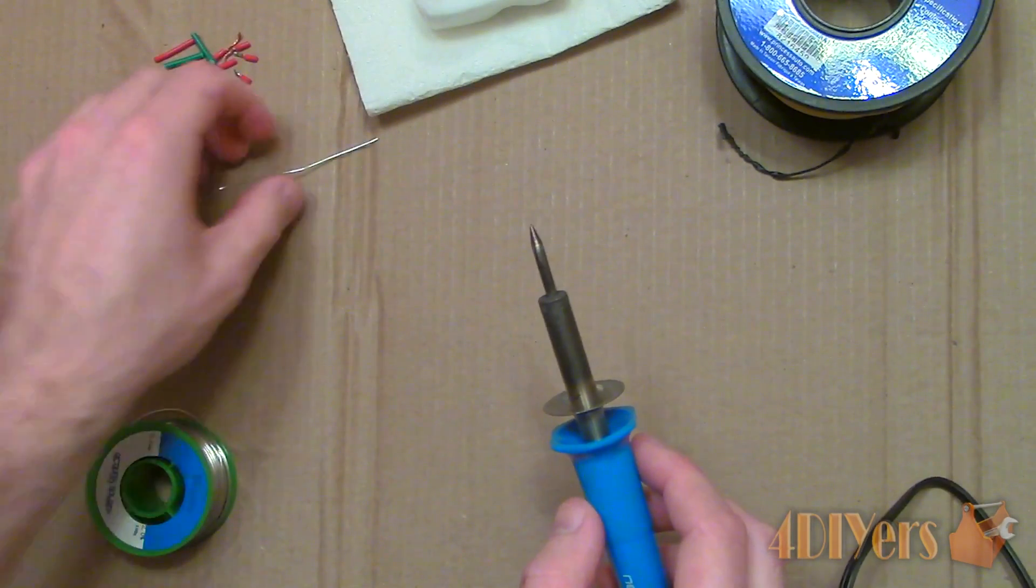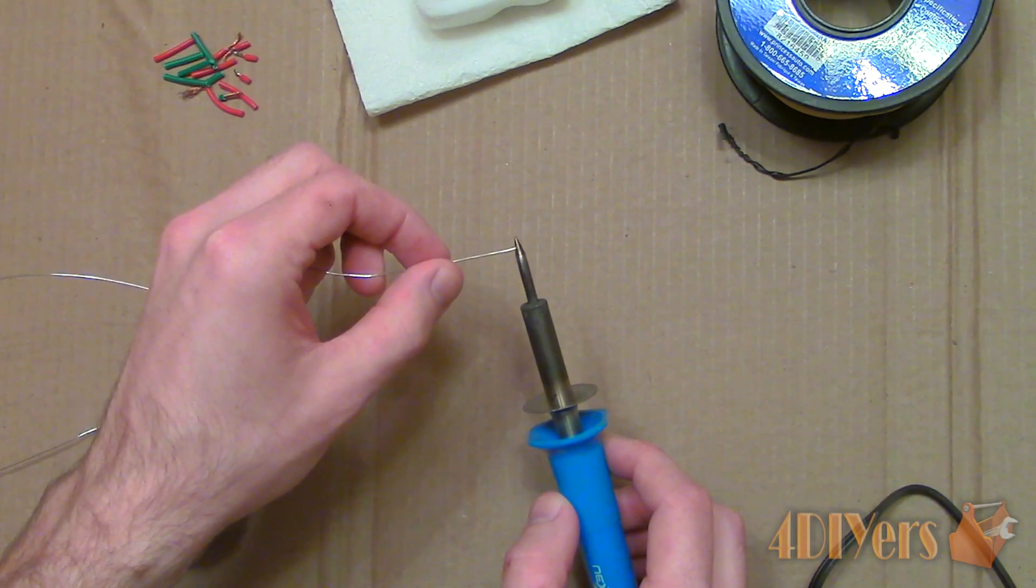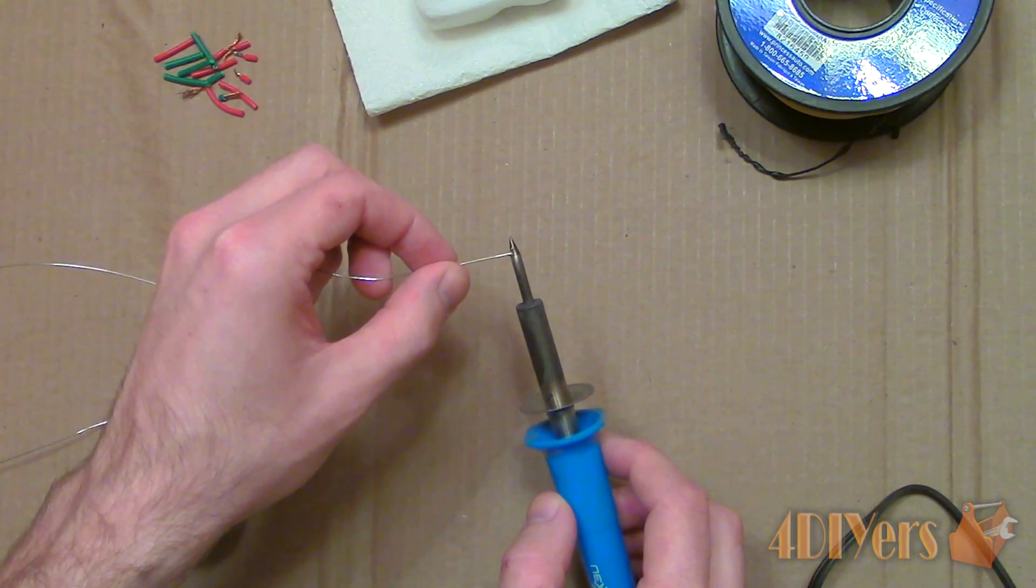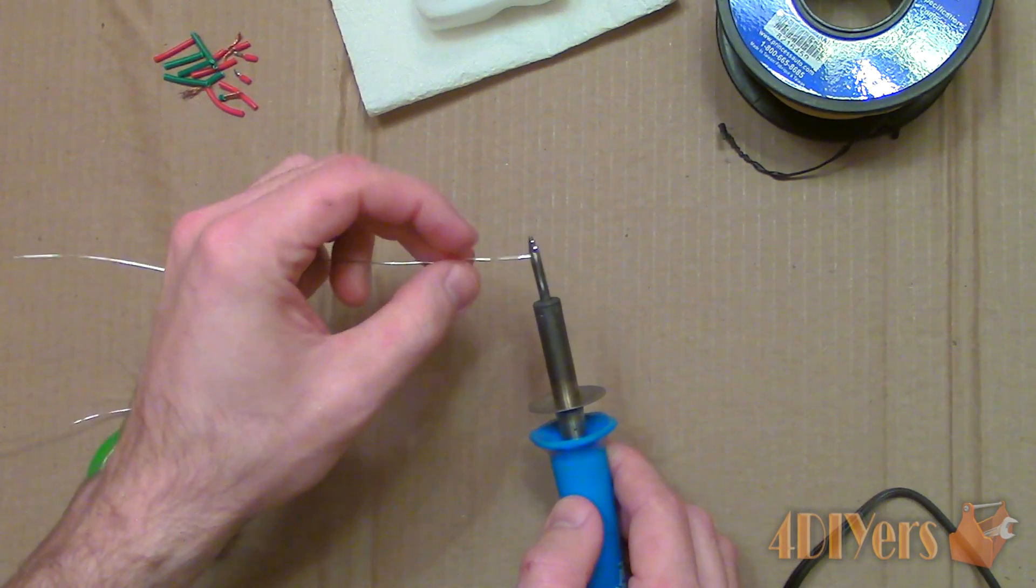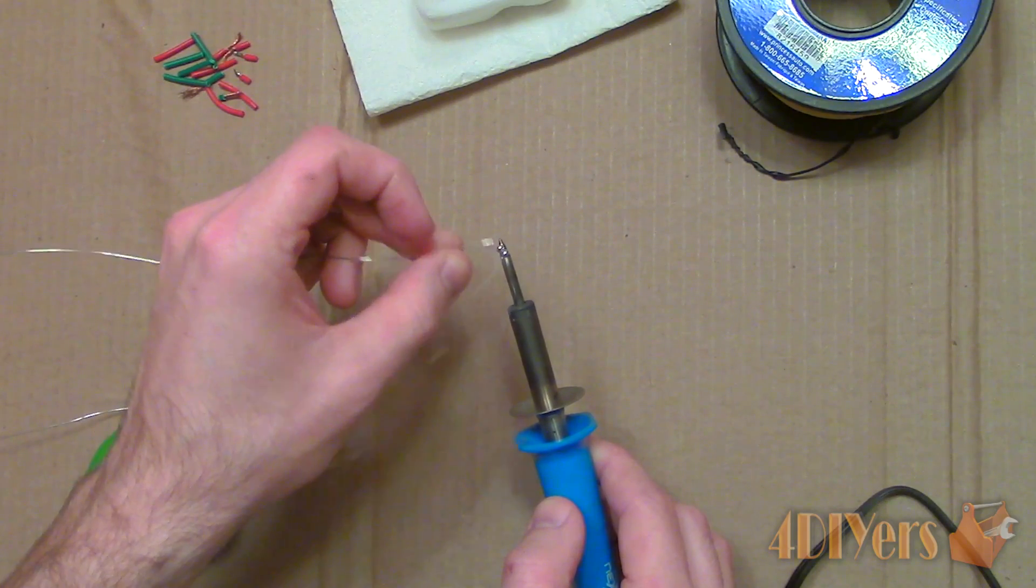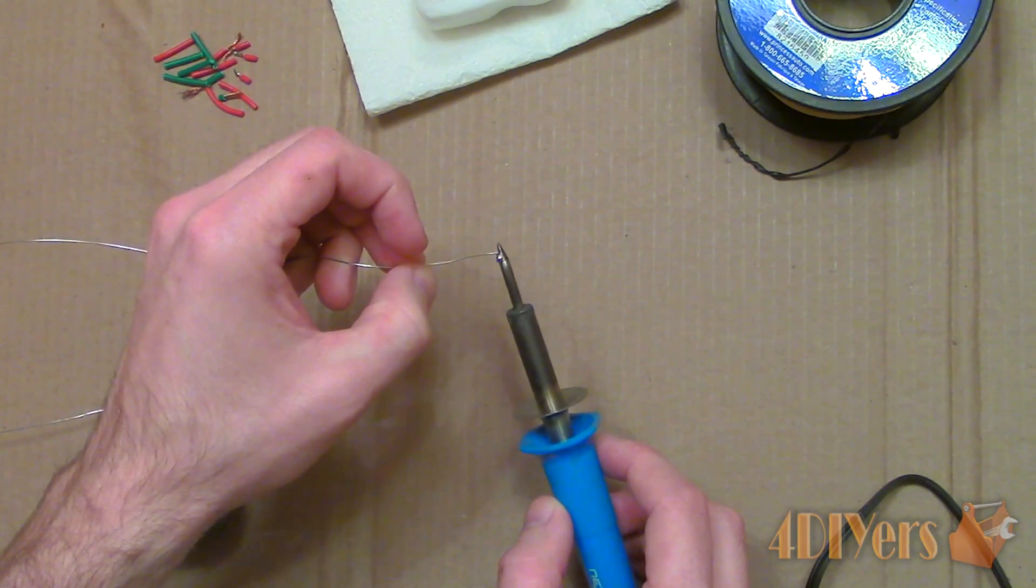Once the tip has been cleaned, now we must tin it. This helps prolong the life and promotes heat transfer to the connection. Do not cut the solder, simply unroll a couple feet so we have plenty to work with. Cutting the solder can be wasteful and whatever we don't use can be rolled up afterwards.